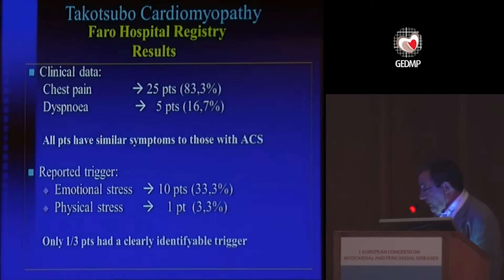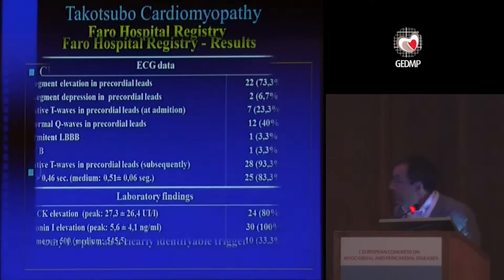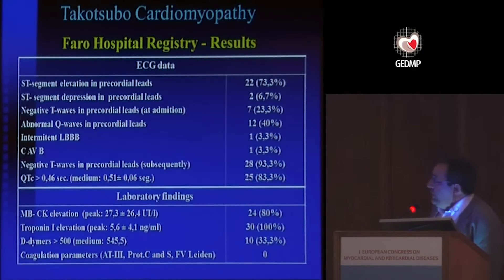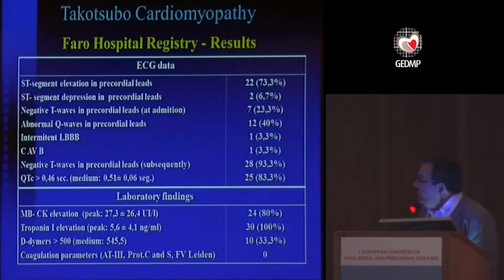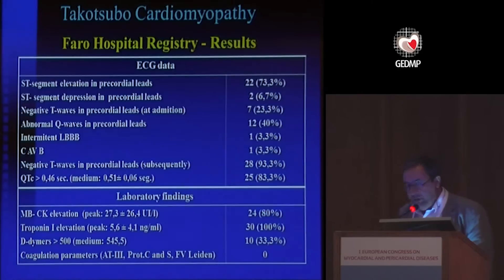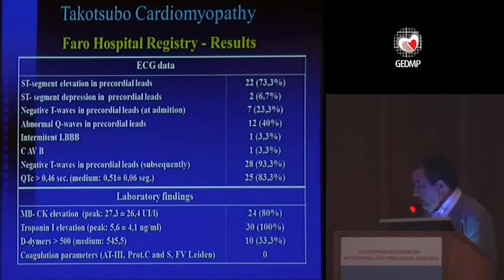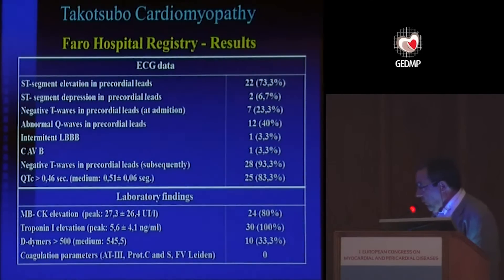Clinical presentations of chest pain or dyspnea are very similar to those with acute coronary syndrome, and only one-third had a clearly identifiable trigger. The ECG data showed ST elevation or ST depression — mainly ST elevation in precordial leads, but also negative waves, mainly in the resolution phase — and prolonged QTc in most patients. Biomarkers and troponin were elevated, with troponin elevated in all patients.